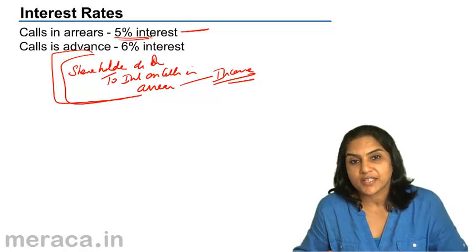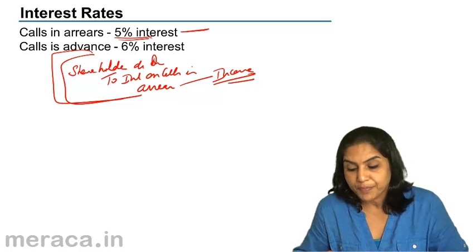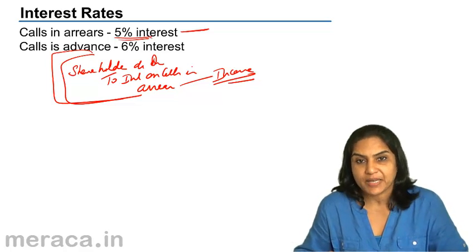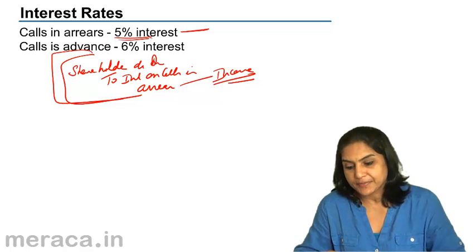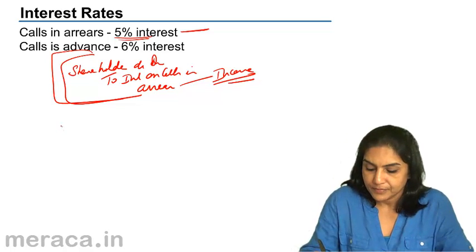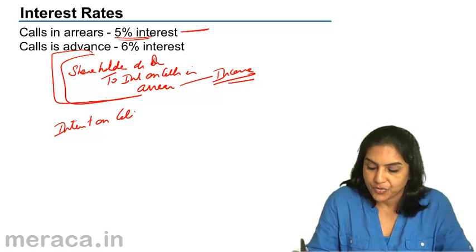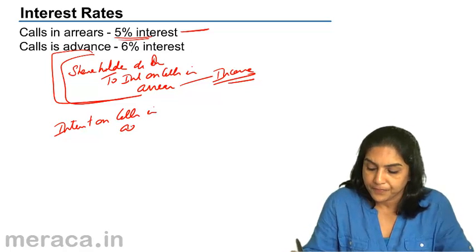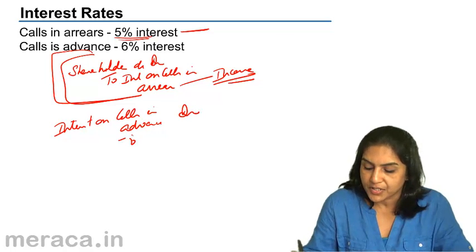Interest on calls in advance would be an expense. The entry would be: interest on calls in advance account debit to shareholder.